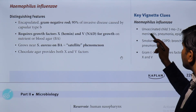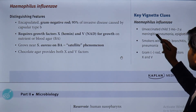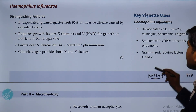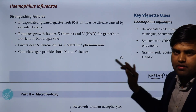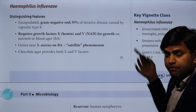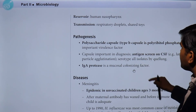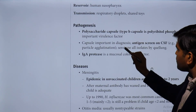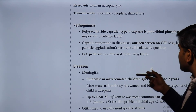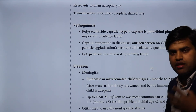The key vulnerable patient group is unvaccinated children between 3 months and 2 years, who can develop meningitis, pneumonia, and epiglottitis. Smokers with COPD may develop bronchitis and pneumonia. These gram-negative organisms require X and V factors. Most people are vaccinated in childhood. The reservoir is humans; transmission is by respiratory droplets. The capsule is a polysaccharide (type B) that inhibits phagocytosis, and the organism also produces IgA protease.